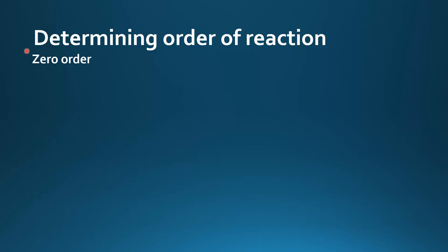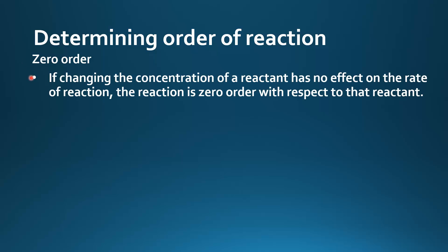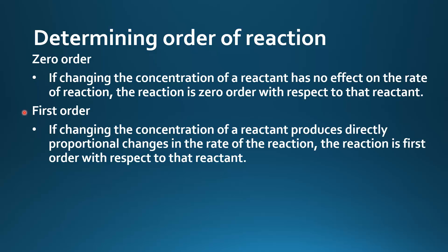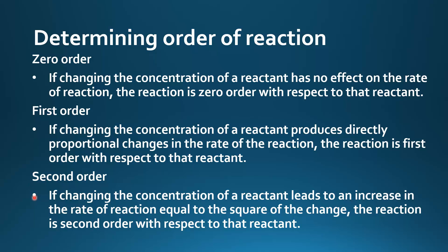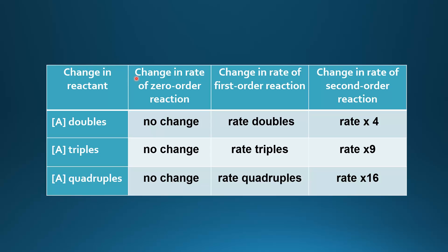Determining order of reaction. For zero order: if changing the concentration of a reactant has no effect on the rate of reaction, the reaction is zero order with respect to that reactant. For first order: if changing the concentration of a reactant produces directly proportional changes in the rate, the reaction is first order. For second order: if changing the concentration leads to an increase in the rate equal to the square of the change, the reaction is second order.